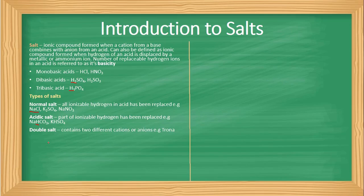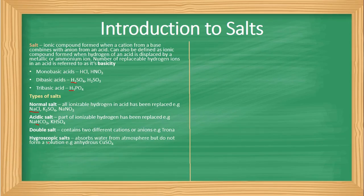There are double salts — these are salts that contain two different cations or anions, so it is not only one form of cation; there could be more than one cation, and also more than one anion. An example is trona.